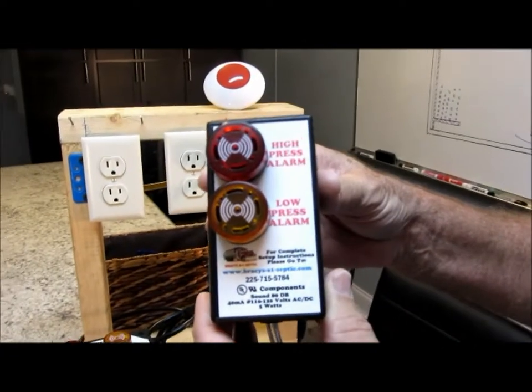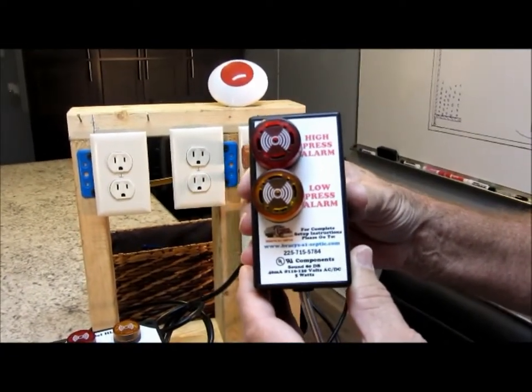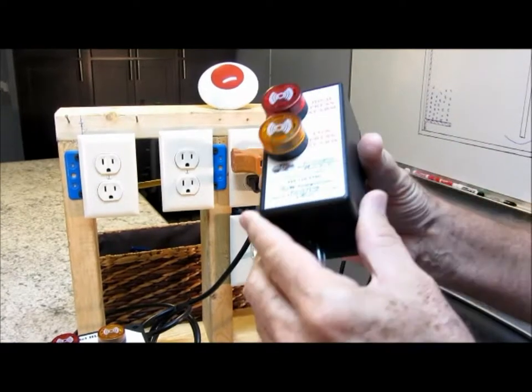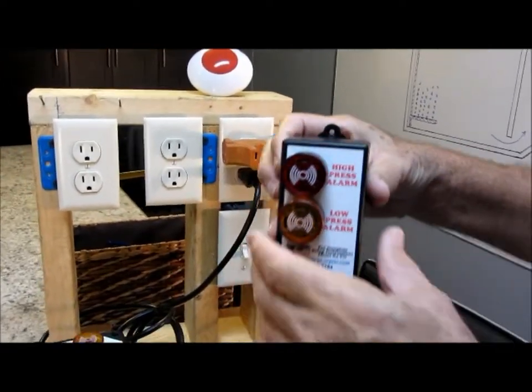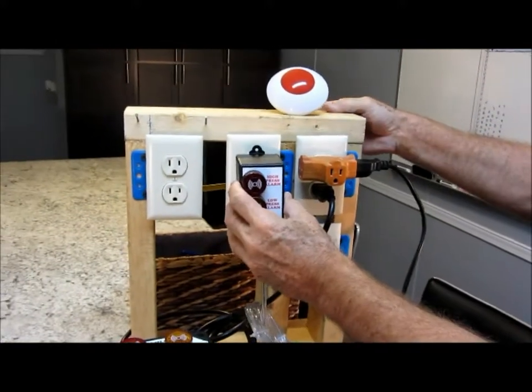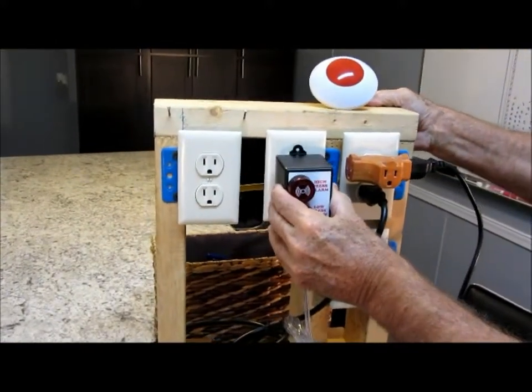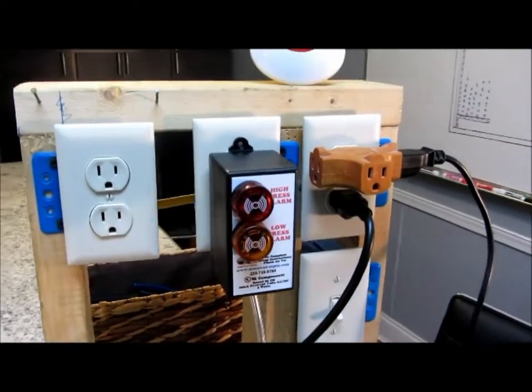If the air pressure exceeds the normal range for a linear diaphragm pump, the red siren will sound its alarm, signifying that you have a complete or partial clog in your airline due to a pinched line or obstruction of the airline diffuser at the bottom of the septic tank.